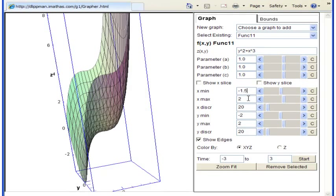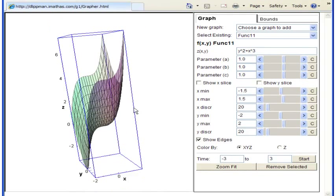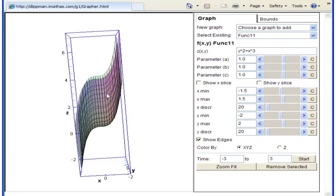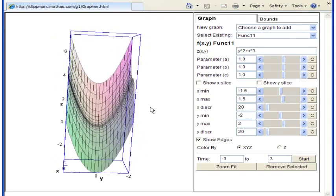So from one direction, looking at it from this side, we're seeing lots and lots of cubic-shaped functions. From this direction, we're seeing lots and lots of parabolas. And notice that those parabolas are being shifted along the cubic function.